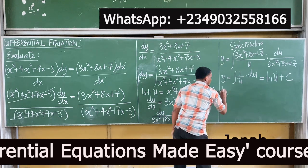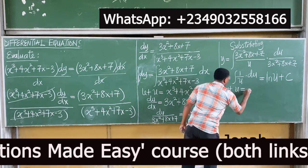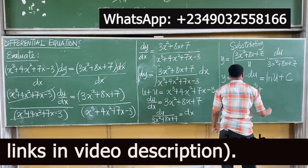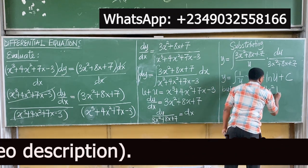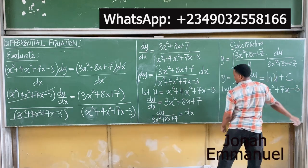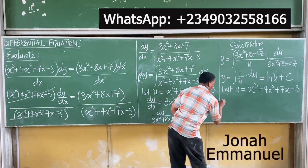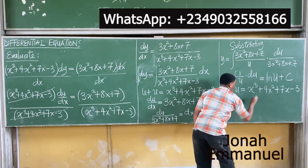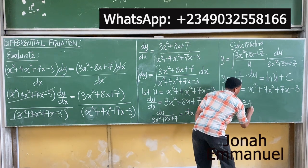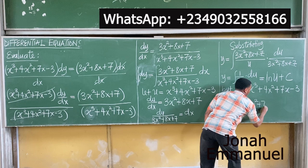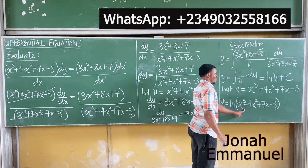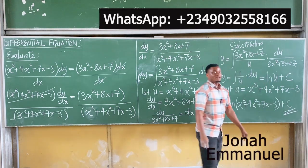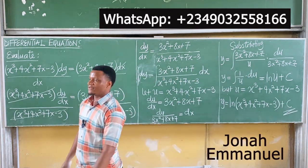Now substitute back the value of u. We said u equals x cubed plus 4x squared plus 7x minus 3. That means y is equal to ln of (x cubed plus 4x squared plus 7x minus 3), plus c. This becomes the answer to that question.